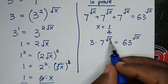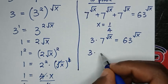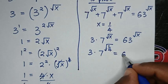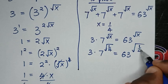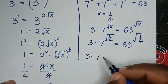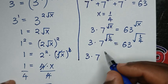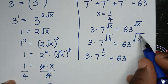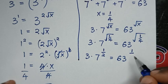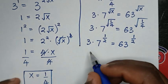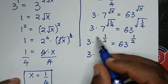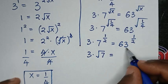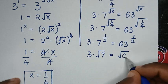We substitute x equals 1 over 4. So it becomes 3 times 7 power square root of 1 over 4, equal to 63 power of square root of 1 over 4. Now square root of 1 over 4 equals 1 over 2. So the left side becomes 3 times 7 power of 1 over 2, and the right side is 63 power of 1 over 2, which is the same as square root of 63.